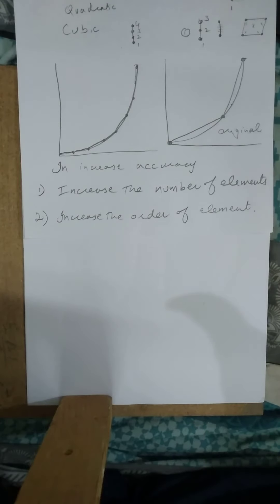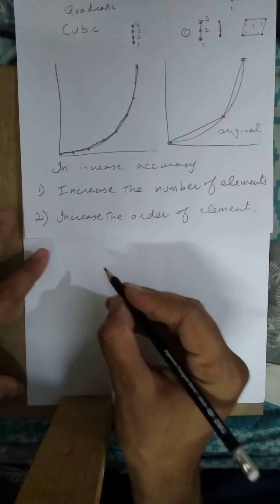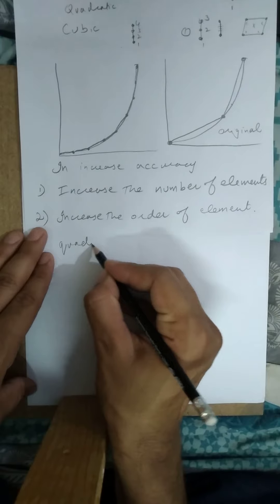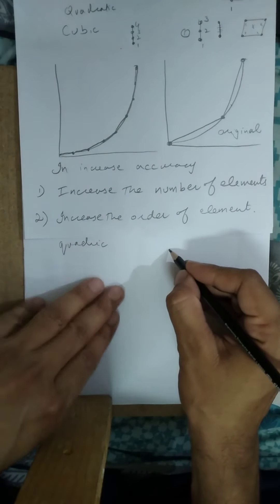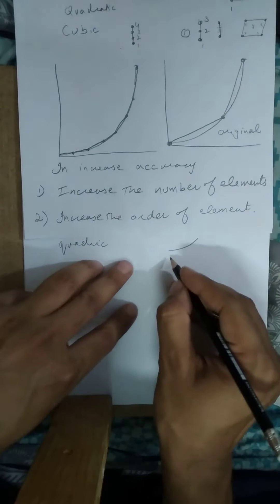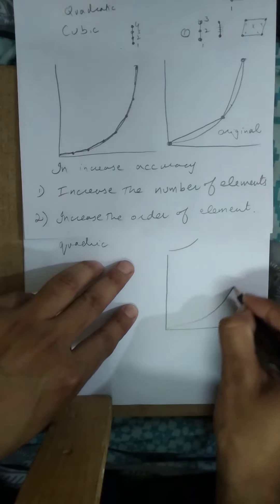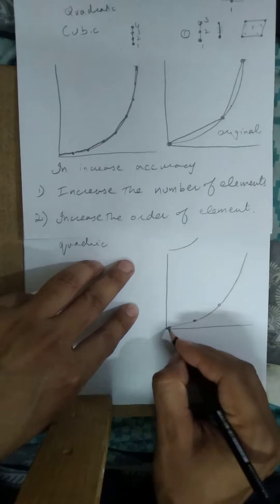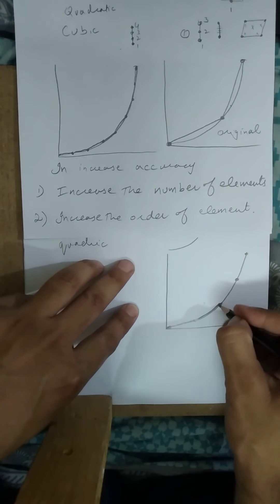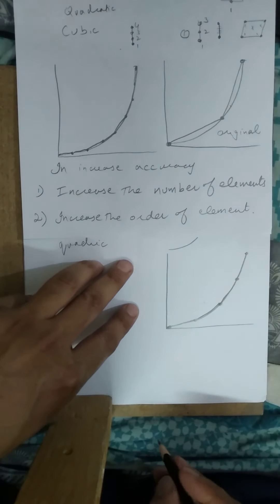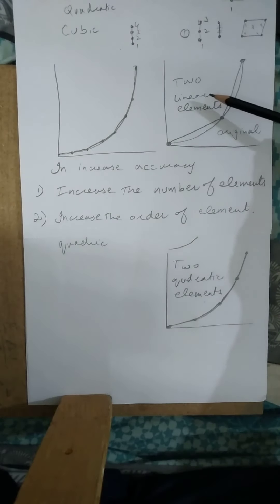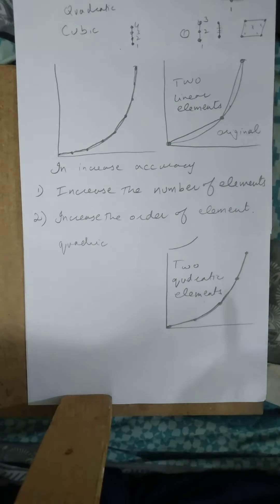We can have two elements only and still achieve much better accuracy. If we go from linear — a line joining two points — to quadratic, a quadratic equation makes a curve itself. So a quadratic element will curve and best fit the original solution. Using two quadratic elements gives much more accurate results than two linear elements.